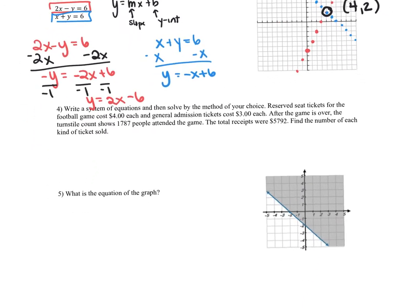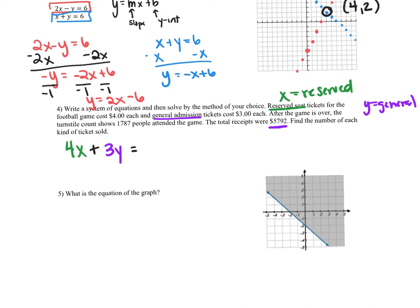The next problem says: write a system of equations and solve by the method of choice. Reserve tickets for the football game cost $4 each and general admission tickets cost $3 each. The turnstile count shows 1,700 people attended and total receipts were $5,792. First, define variables: x equals reserve seats and y equals general admission tickets. The money equation is 4x plus 3y equals 5,792.